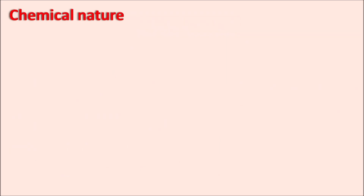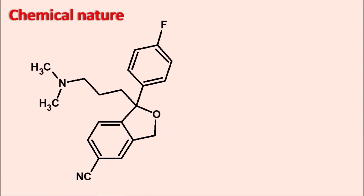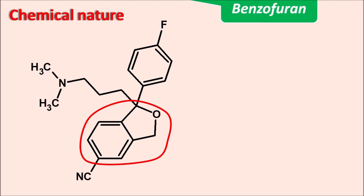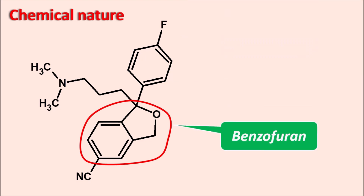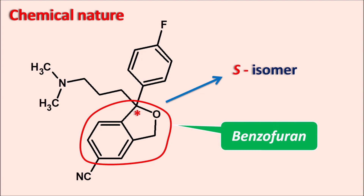What is the chemical nature of this drug? This is the structure of escitalopram, and here one heterocyclic ring system is present — this is benzofuran. So escitalopram is a benzofuran derivative, and we can observe a stereocenter at the first position. This structure is available as both R-isomer and S-isomer, but escitalopram is the pure S-isomer.